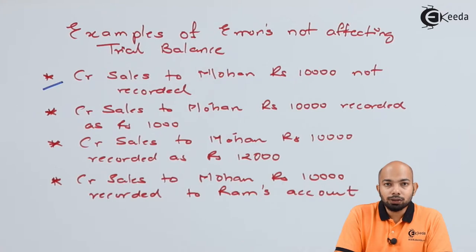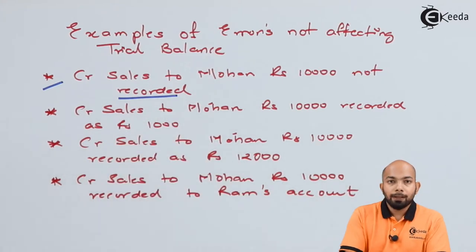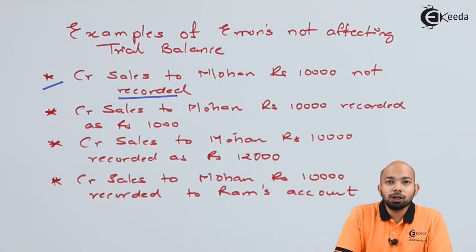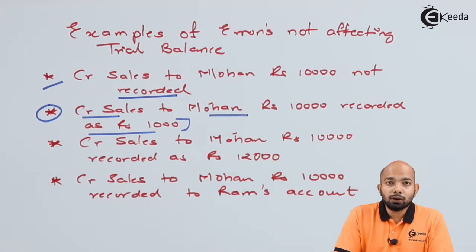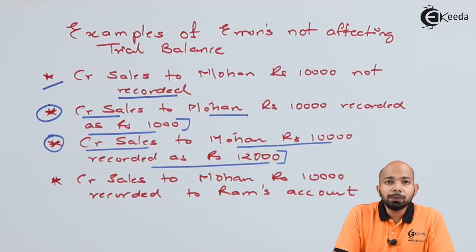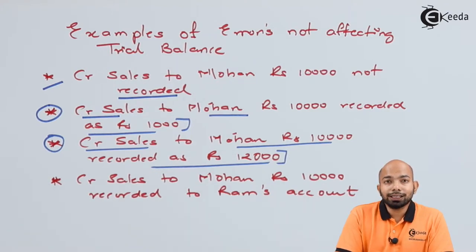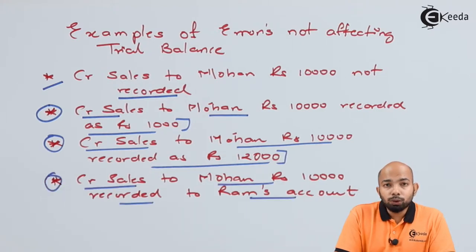The first transaction: credit sales of rupees 10,000 to Mohan have not been recorded. The second: credit sales to Mohan of rupees 10,000 recorded as rupees 1,000. The third: credit sales to Mohan of rupees 10,000 has been recorded as rupees 12,000. The fourth: credit sales of rupees 10,000 to Mohan has been erroneously recorded to Mr. Ram's account.